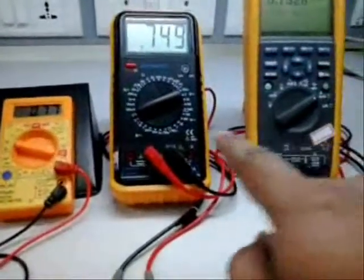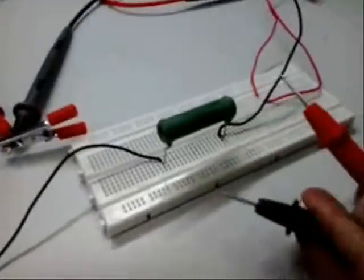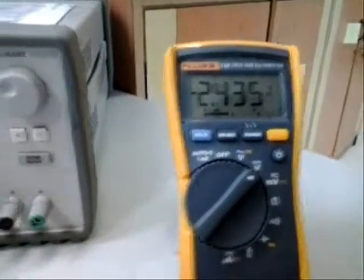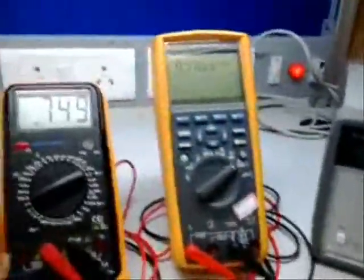Now let us start with measuring the voltage drop across resistance. So ideally if there is no voltage drop across the ammeters, then the entire voltage should appear across the resistance. So it is 2.4, whereas we have applied 3.3. So which means that we are losing this voltage somewhere else.